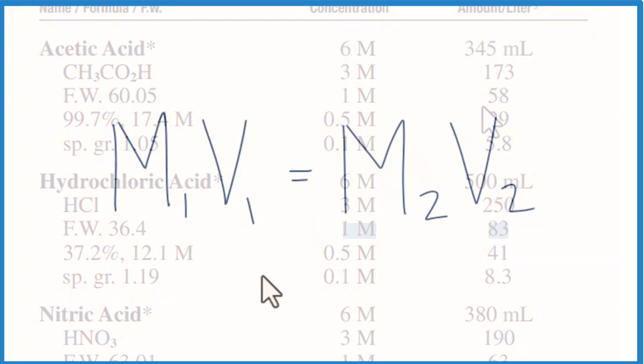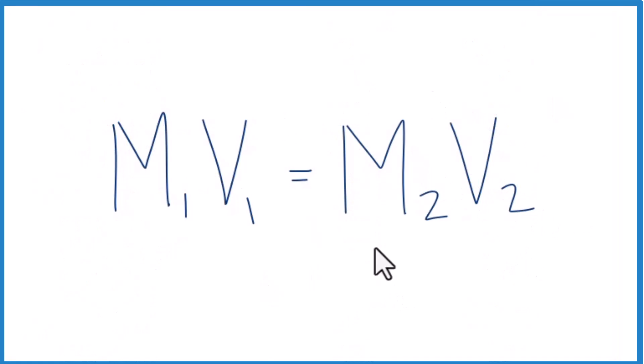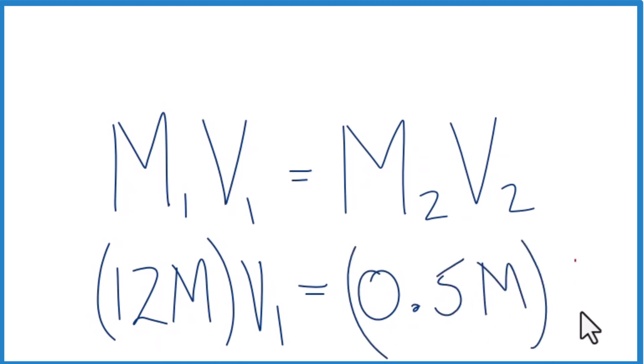Here's another way. You could use the formula M1V1 equals M2V2. If you look at the bottle of hydrochloric acid, it'll tell you that concentrated hydrochloric acid is 12 molar, and we're going to multiply that by V1. That's how much we want to put in our solution to get our 0.5 molar solution of HCl.